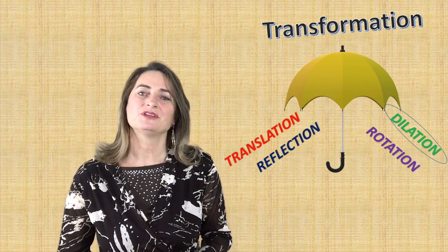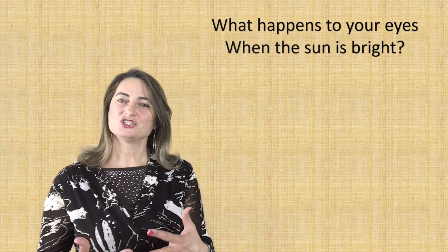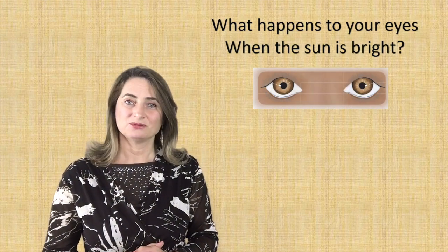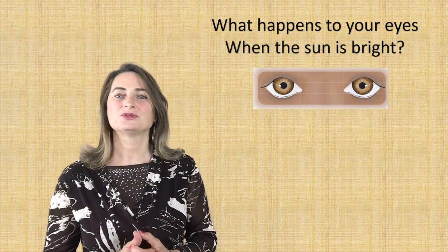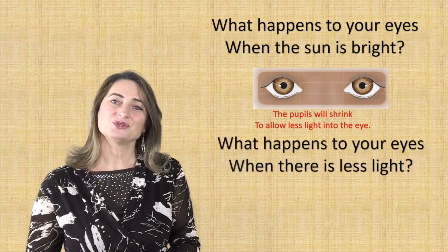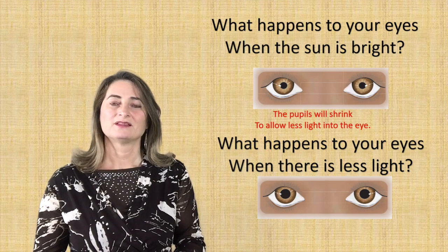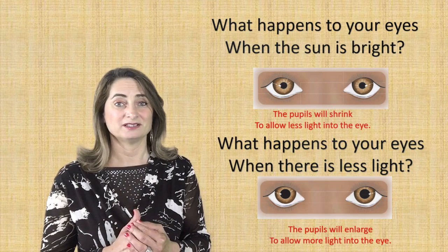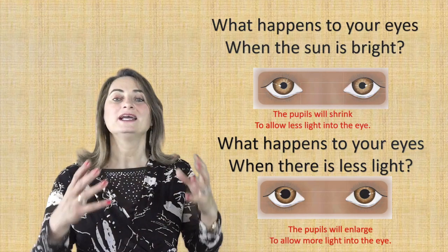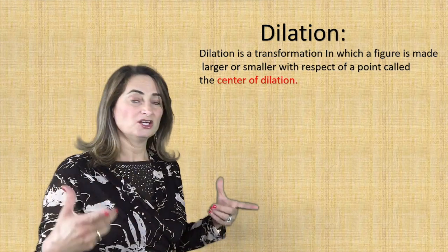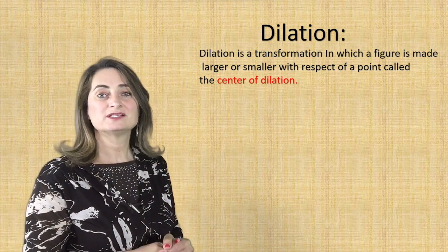When we talk about dilation, I want you to think about your eyes. When you go in the sun and it's too sunny outside, the pupil of your eye will shrink and be smaller, allowing less light in so you're not bothered. But in the dark, when there isn't enough light, the pupil will enlarge to allow more light into your eyes so you can see better. That's the same thing when you go to the doctor and they dilate your eyes to see what's inside. So what is dilation? Dilation is a transformation in which a figure is made larger or smaller with respect to a point called the center of dilation.